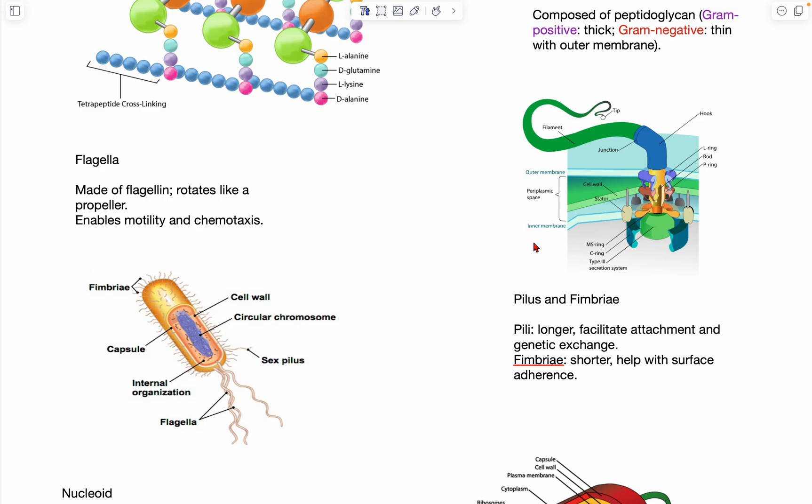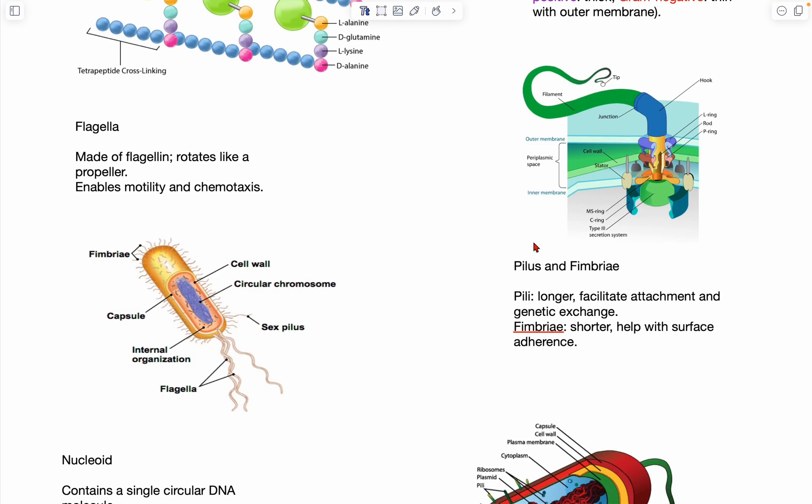And they provide mobility for the bacteria to basically just swim around towards nutrients or away from harmful substances. And they do this through a process called chemotaxis. And so the energy for this movement comes from a proton motive force, which is generated across the plasma membrane. So basically just a bunch of protons or H-plus ions just move across the membrane, which generates energy, which allows the flagellum to move.